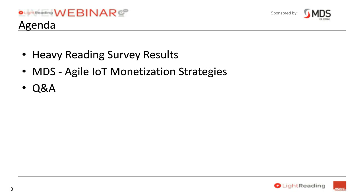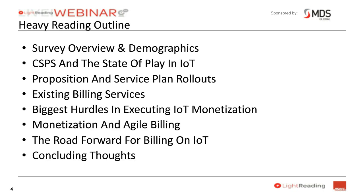We will also have two poll questions, one in between my session and Akhil's, and one at the back end of Akhil's, which will also give you further opportunity to interact with us. What I'm going to cover this morning is the overview and demographics of the survey, and then walk through what the state of play of IoT is for CSPs, proposition and service plan rollouts, how they're utilizing existing billing systems, and the biggest hurdles that they are finding in executing on IoT monetization. We will also explore what we found about monetization and agile billing and talk about the road forward and some concluding thoughts.